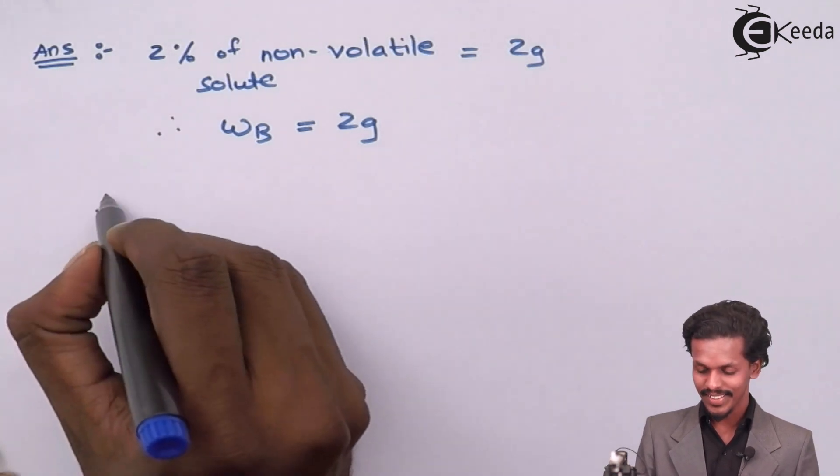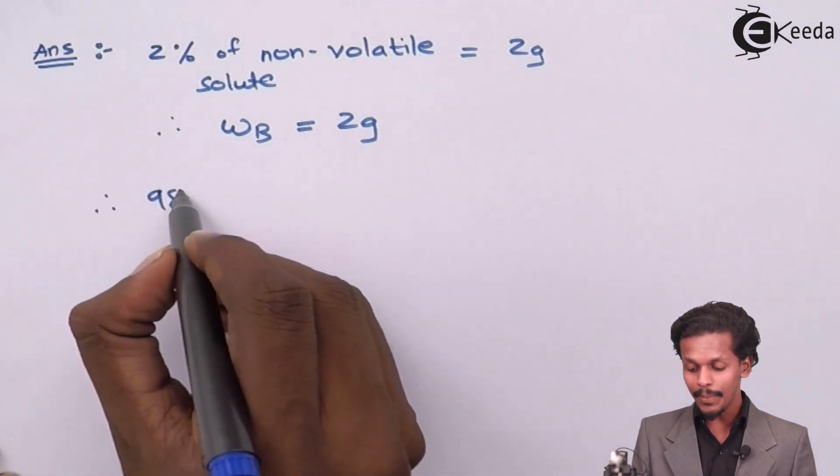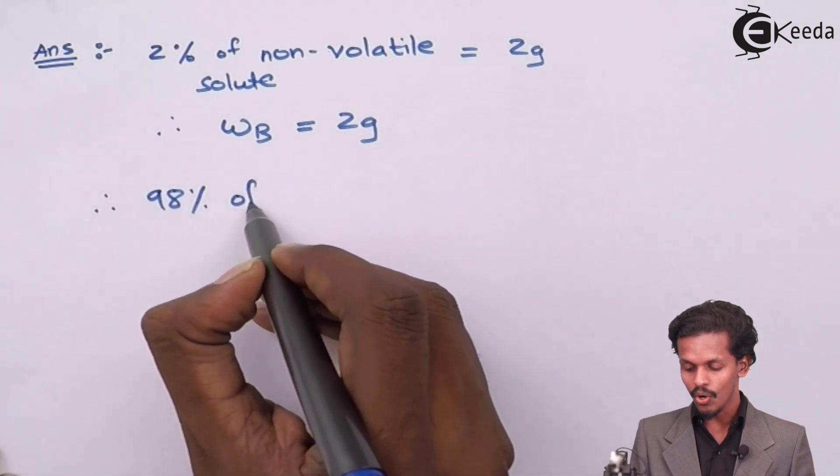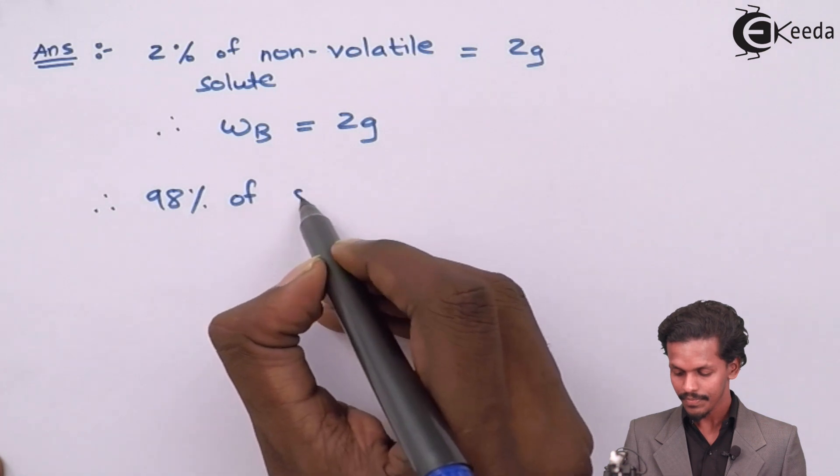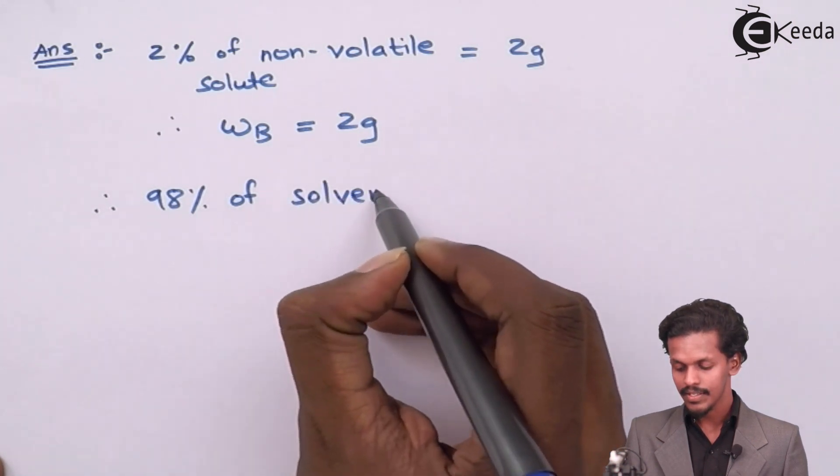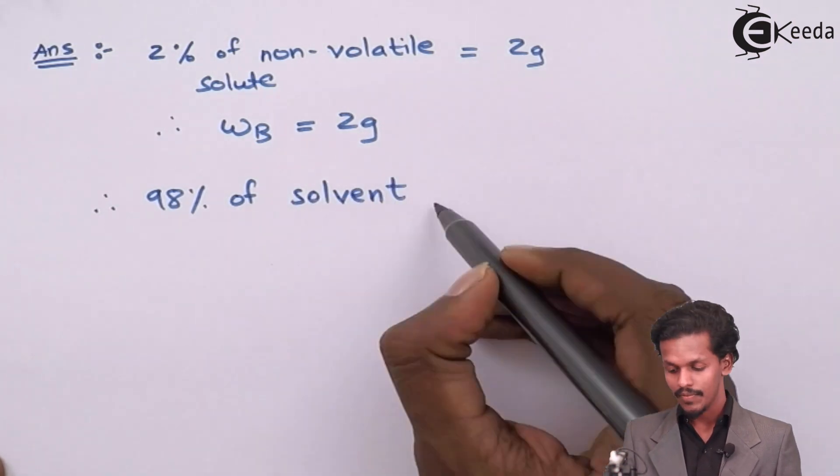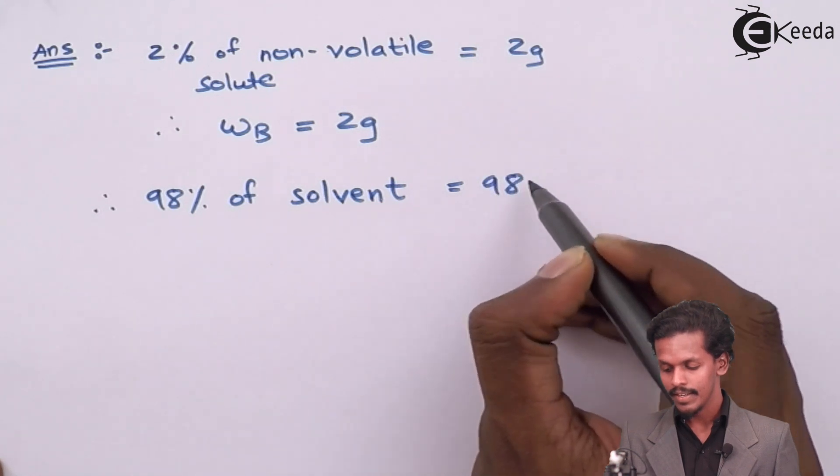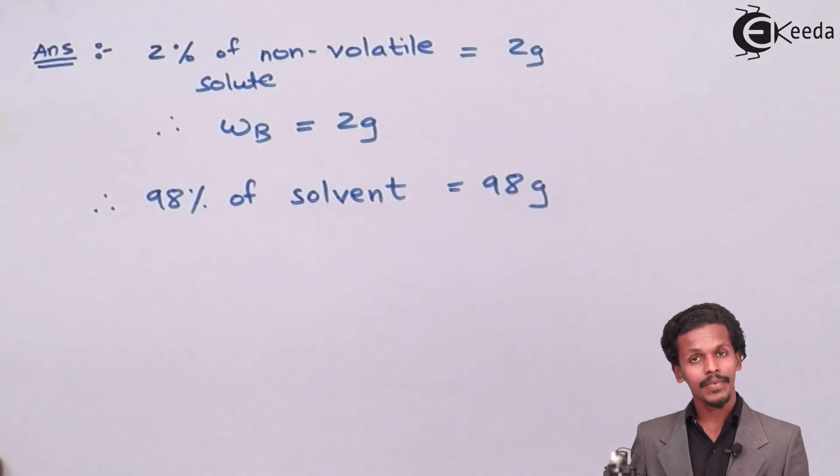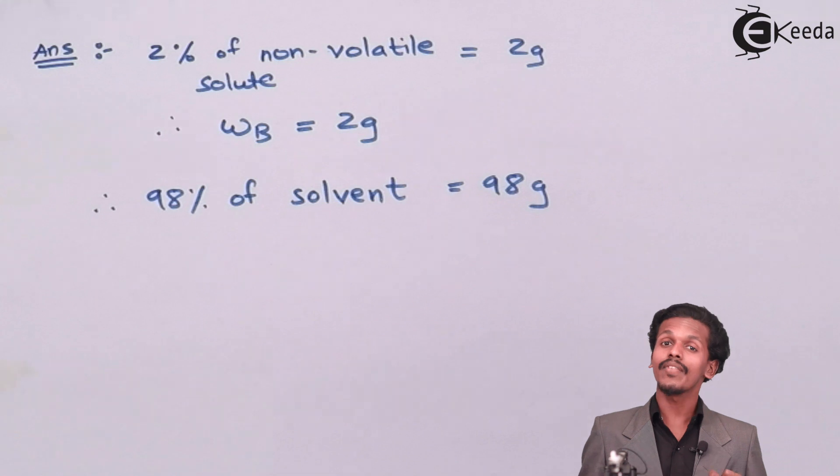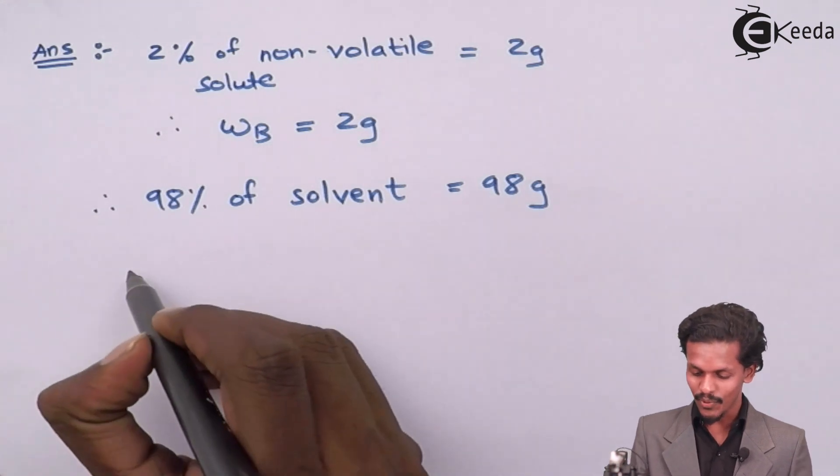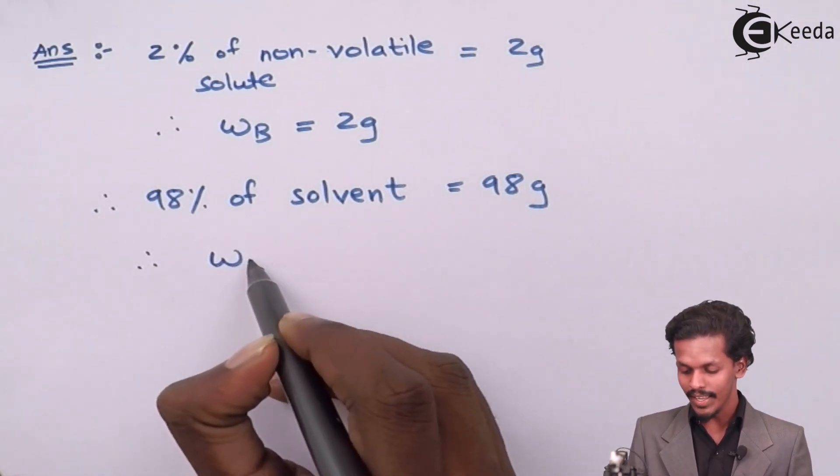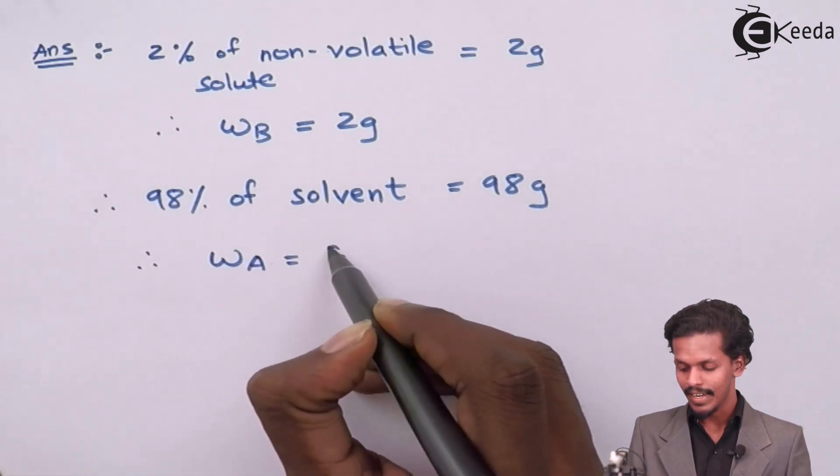Therefore 98% of the solution will contain solvent which is nothing but 98g. 98g is very much higher than the 2g which means 98g is the solvent. So therefore the WA is 98g.